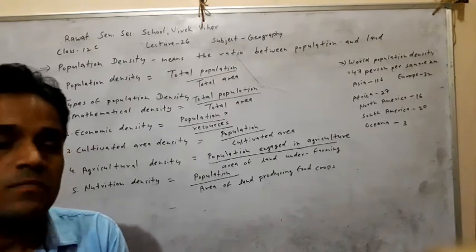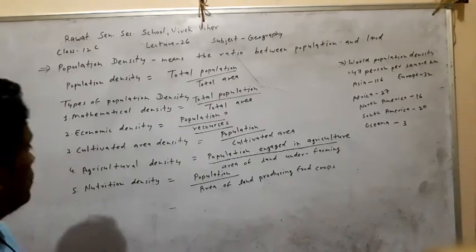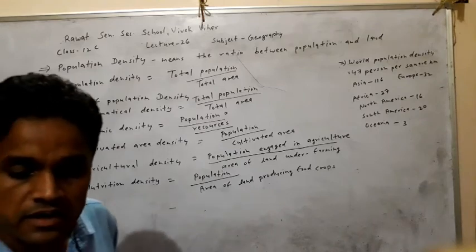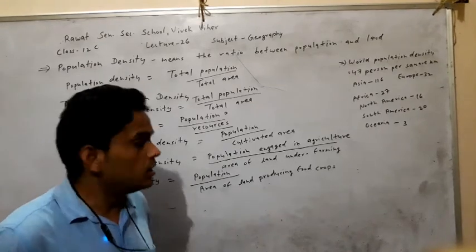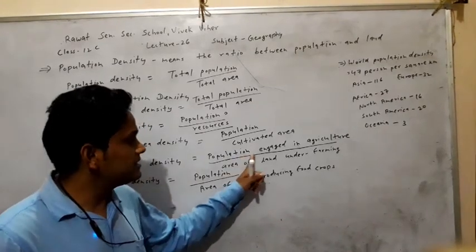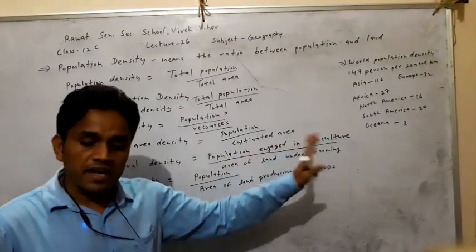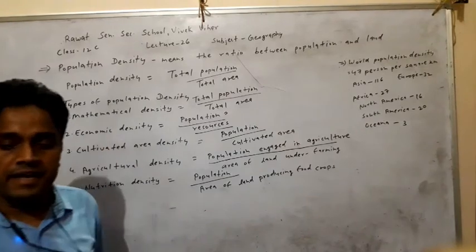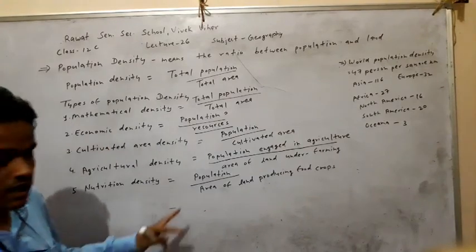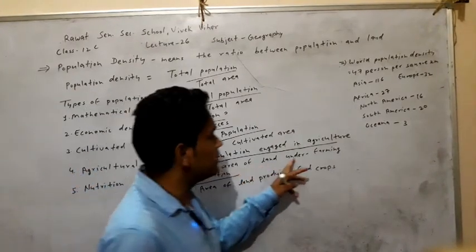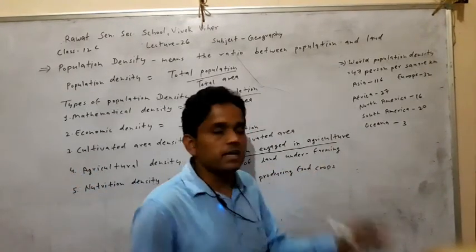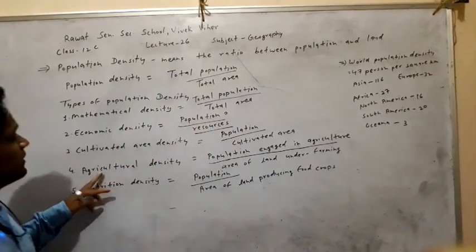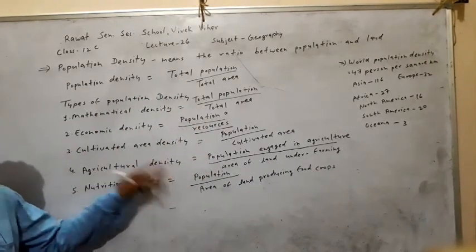Clear? Agricultural density is the ratio of people engaged in agriculture and area of land under farming — this is called agricultural density.